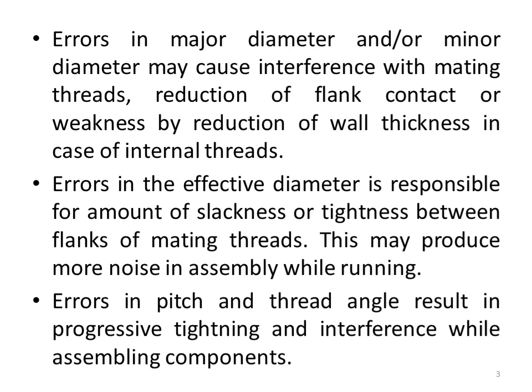Errors in the effective diameter of the screw thread are responsible for the amount of slackness or tightness between the flanks of mating threads. This may produce more noise in assembly while running. In situations where the noise parameter must be very low, such screw threads are not applicable, and such errors must be removed for smooth running.